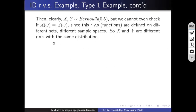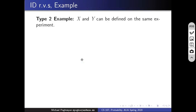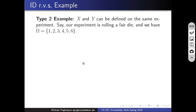So X and Y are different random variables with the same distribution. Now for Type 2: I want to give two random variables defined on the same experiment, having the same distribution Bernoulli(0.5), but not equal to each other — they do not coincide.